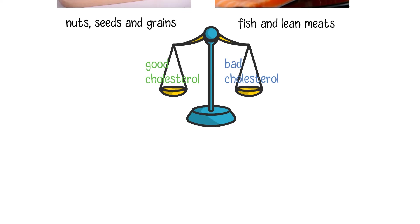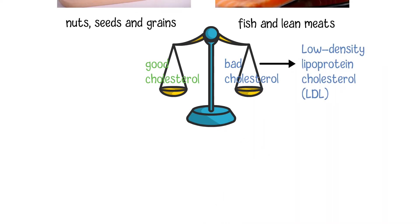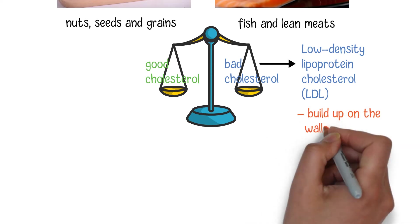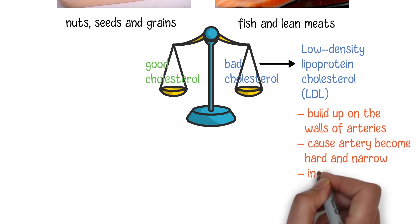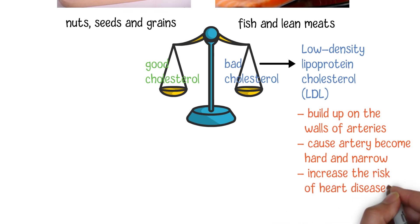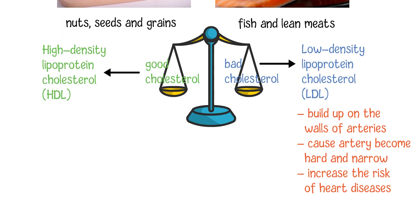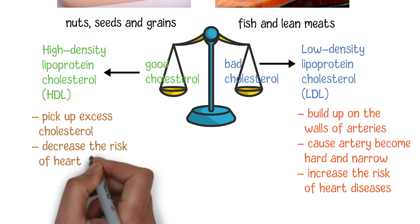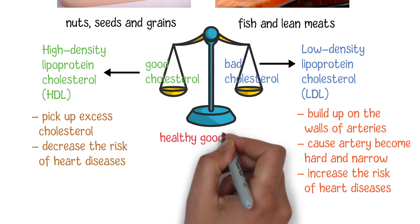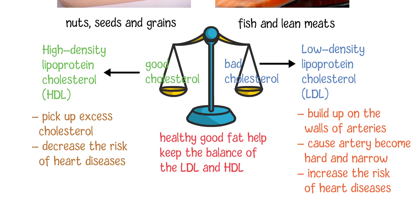Generally, there are two main types of cholesterol in human blood. One type is called low-density lipoprotein cholesterol, also referred to as LDL, or bad cholesterol, which can build up on the walls of arteries over time. The result is that it causes artery walls to become hard and narrow and increases the risk of heart diseases. In comparison, high-density lipoprotein cholesterol, also called HDL or good cholesterol, picks up excess cholesterol from the blood and sends it back to the liver. The healthy good fat can help keep the balance of LDL and HDL cholesterol in the blood and thus keep the health of our blood vessels.